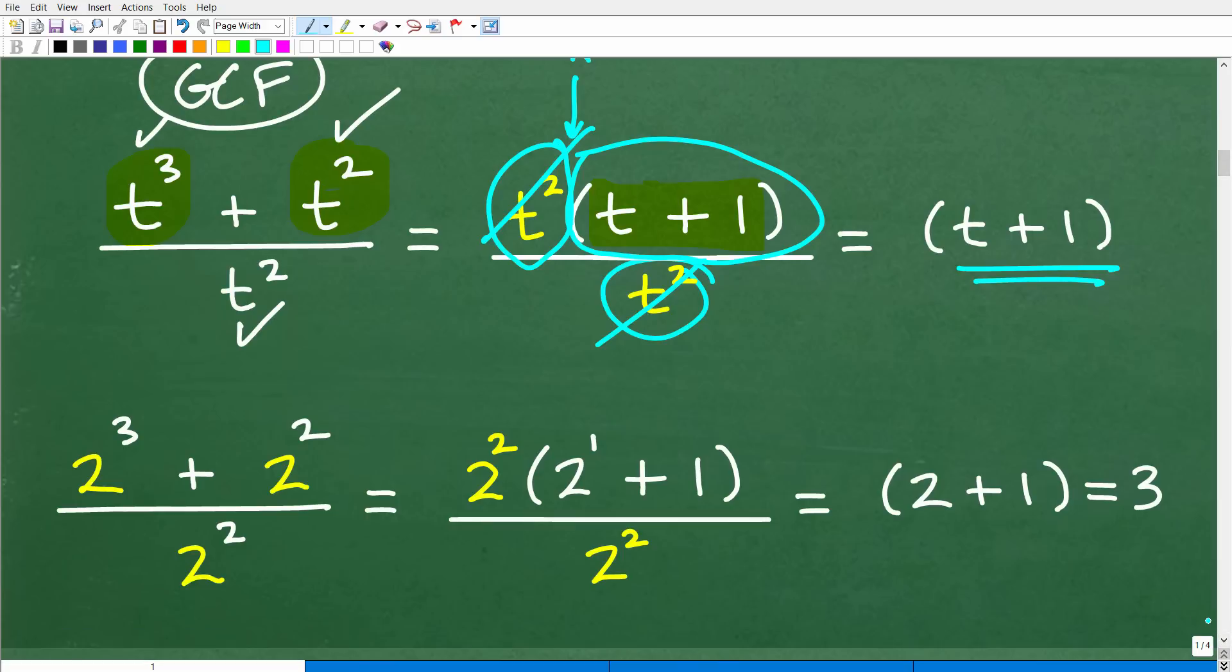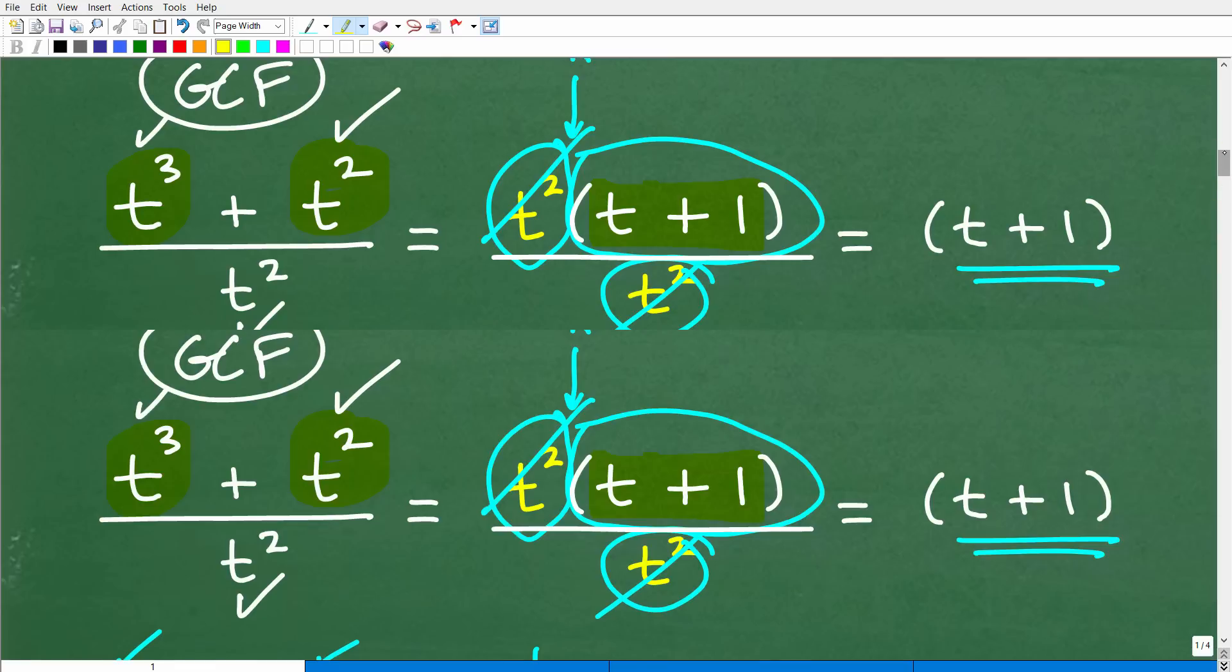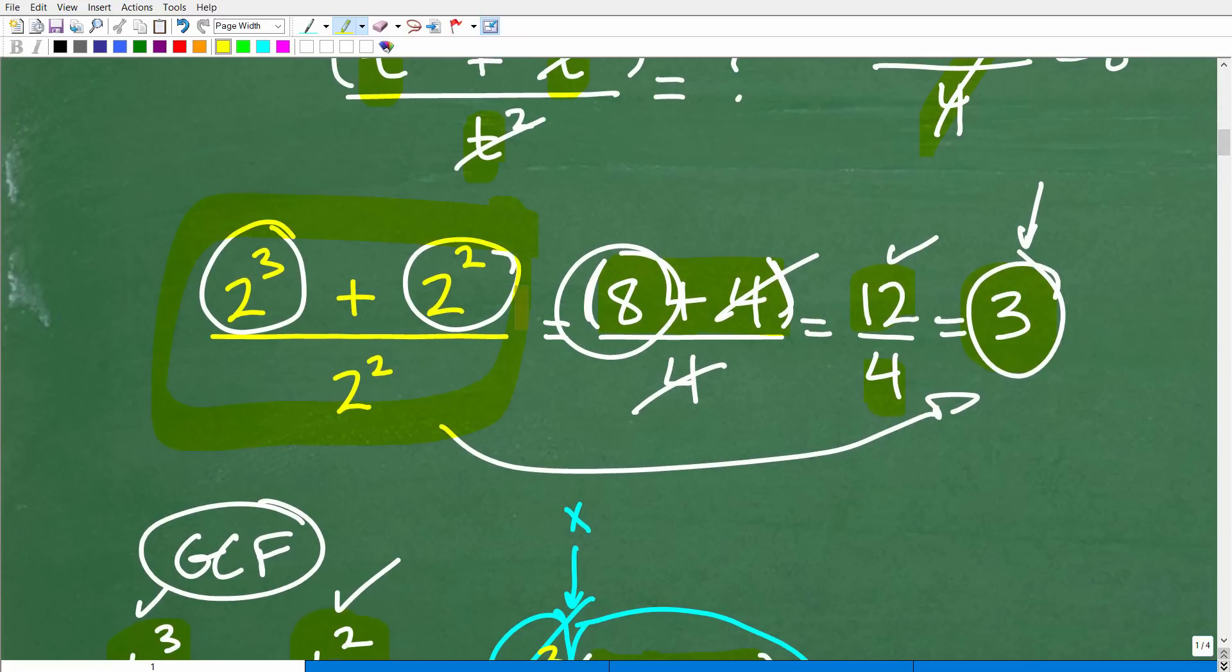Okay, and you can see the same thing if we replace our t's with 2's, right? So, here is our problem that we just did where it was 8 plus 4 over 4. I have 2 cubed plus 2 squared over 2 squared. Well, what's the greatest common factor? 2 squared, okay? 2 squared times 2 to the first gets me back to 2 cubed. And then 2 squared times 1 gets me back to 2 squared. So, here, again, you have two factors here. This is a factor, okay? So, I can cross-cancel those factors, which leaves me with 2 plus 1 as the answer. And 2 plus 1, the last time I checked, is 3, which, of course, is the same thing as us figuring that out this way.